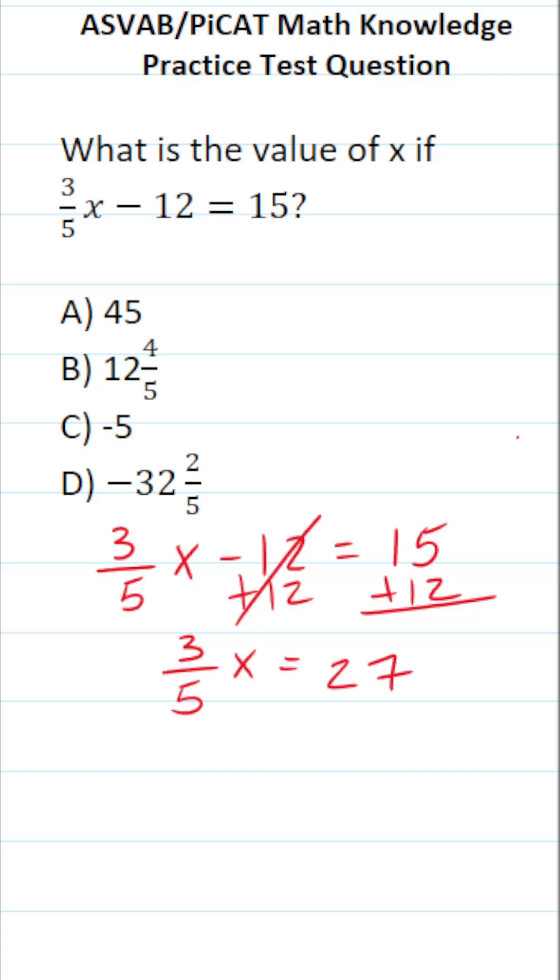To clear this three fifths in front of x, we're going to multiply both sides of this equation by the reciprocal of three fifths, which is going to be 5 over 3. In doing so these cross out, leaving you with x on this side.